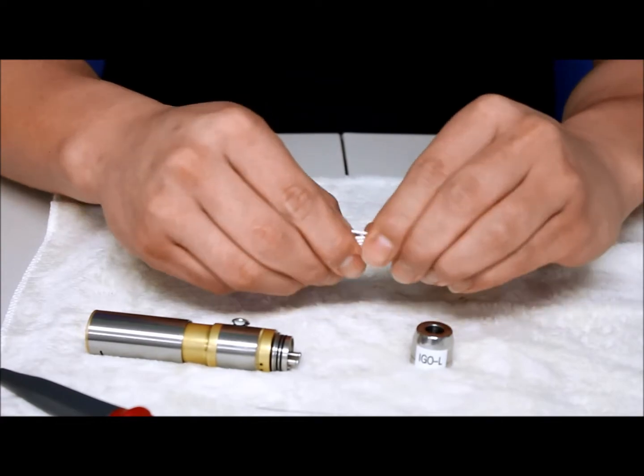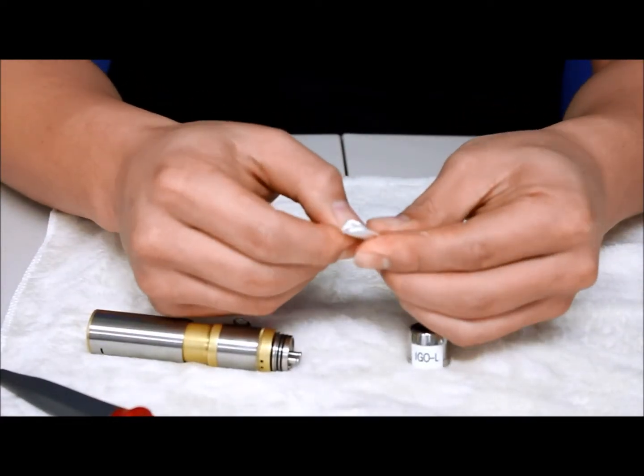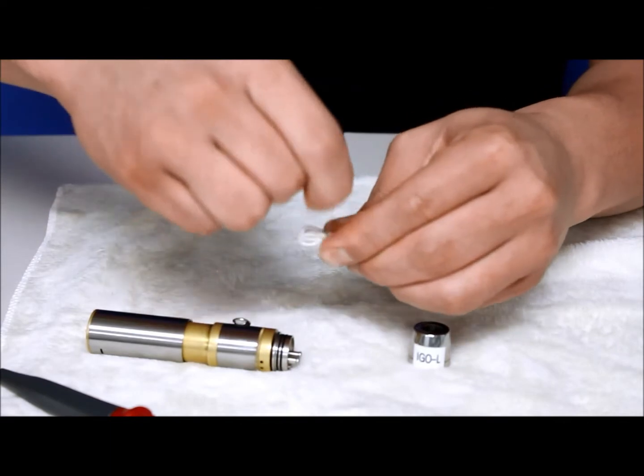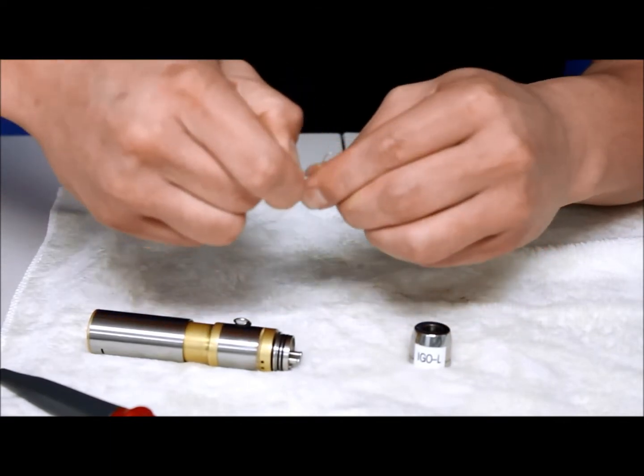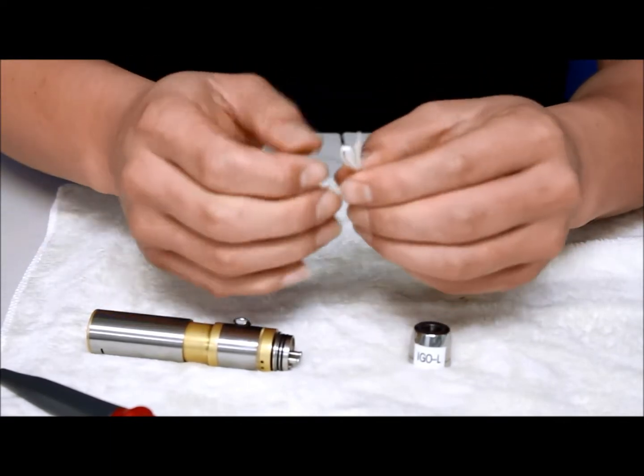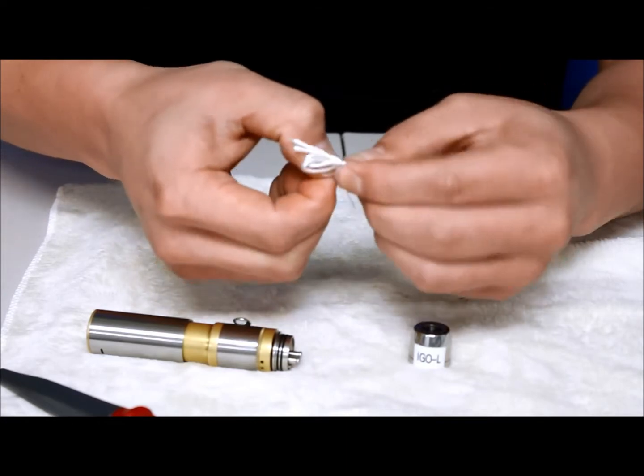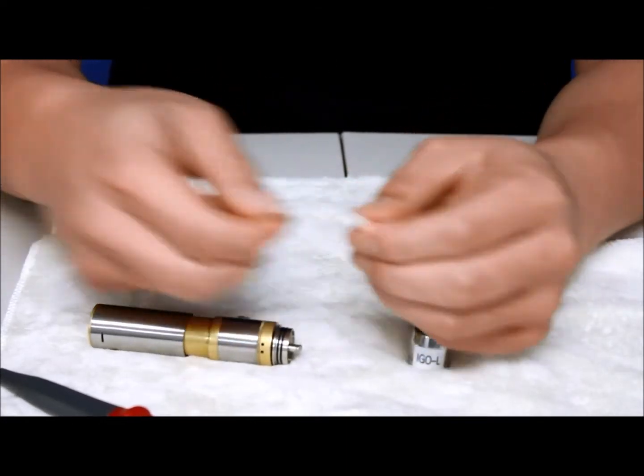I'm going to take the kanthal wire and just wrap it three times. One, two, and three. Okay, so it's going to look like that. It's a 3-2 wrap kanthal.